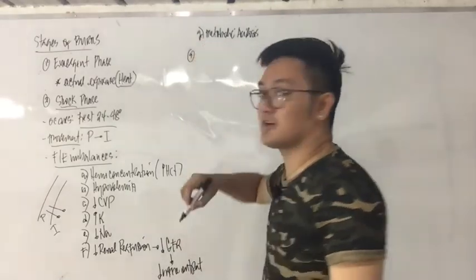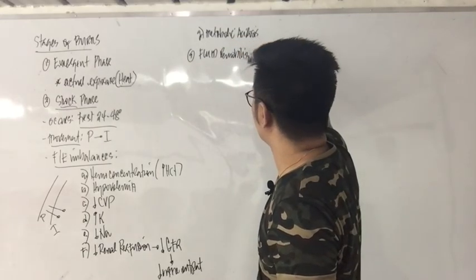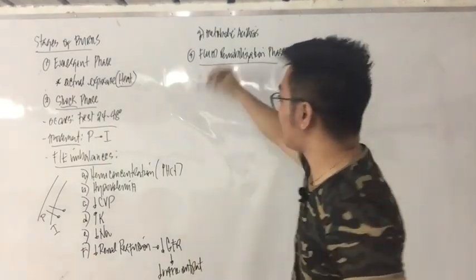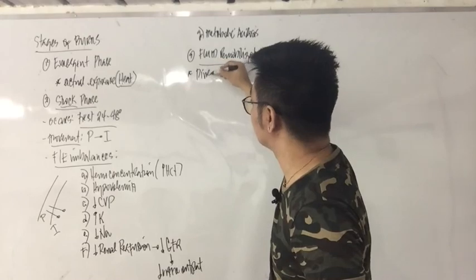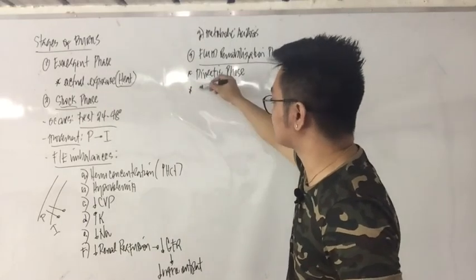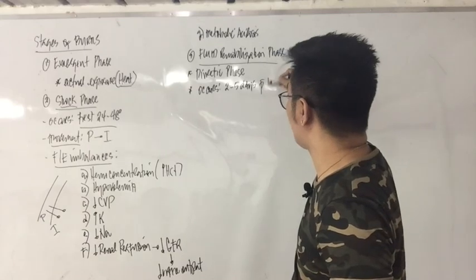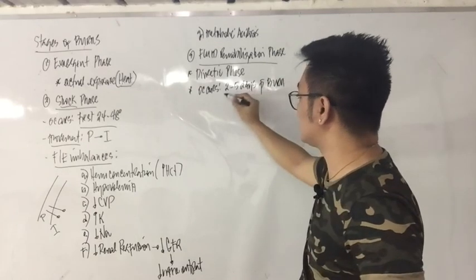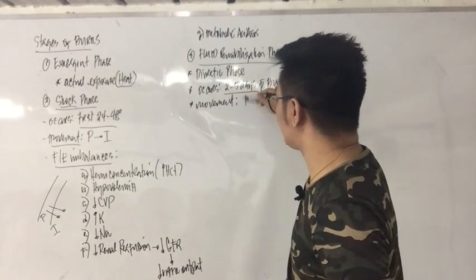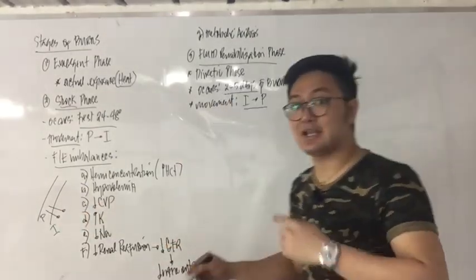The third stage is called the fluid remobilization phase — some books call it the diuretic phase. This occurs two to five days post burn injury. The movement of fluid is now interstitial to plasma, which is the reverse of the shock phase.